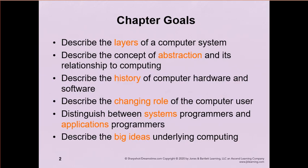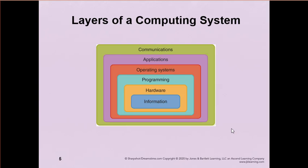You need both in order for a computer to be useful at all. So these layers of a computer system — information is the actual data that's stored on a computer. Computer information is stored in what we call bits and bytes, meaning it is only storing ones and zeros. That's all that a computer can handle. We'll be talking about that more, probably next week, about how computers do that.